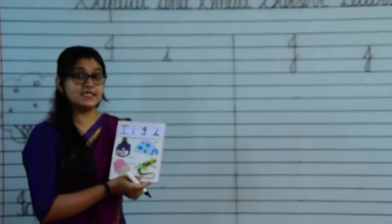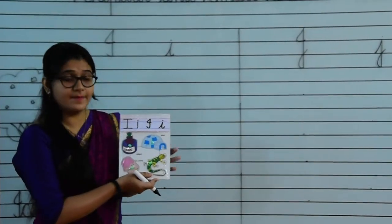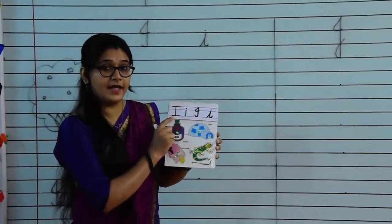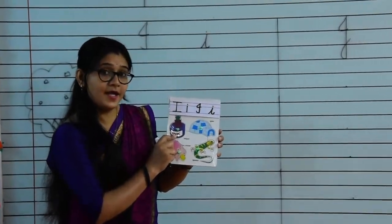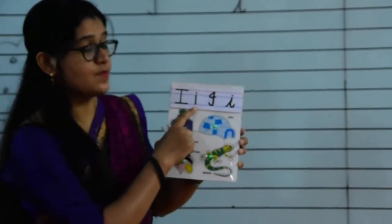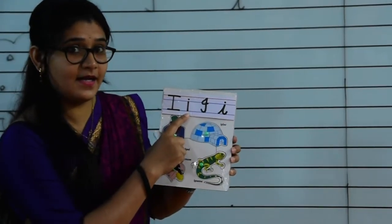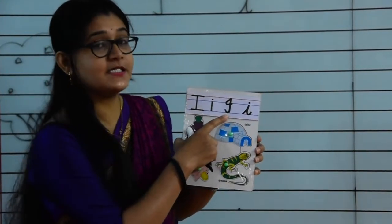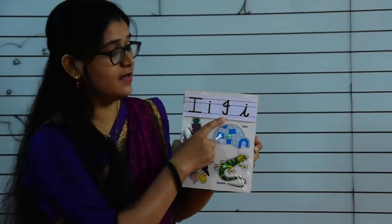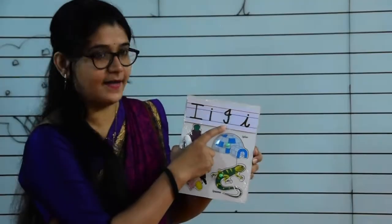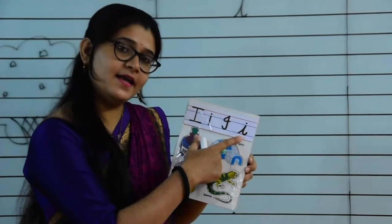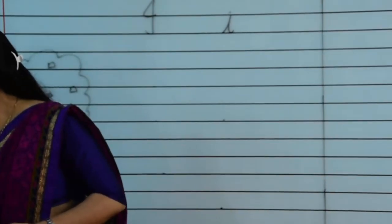This is letter I — capital letter I. I for ink pot. Small letter I, I for igloo. Capital cursive letter I and small cursive letter I.